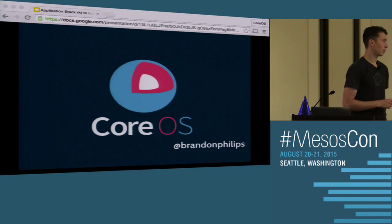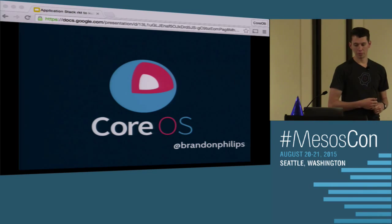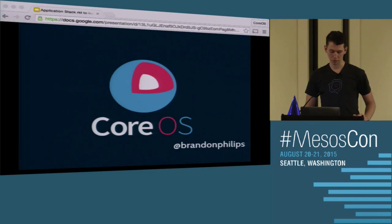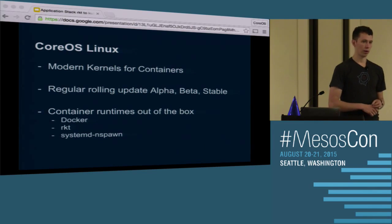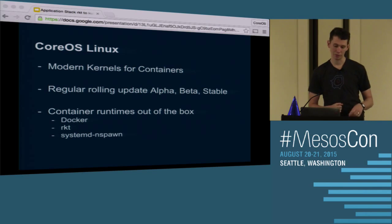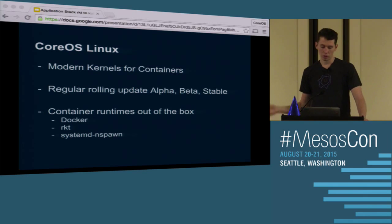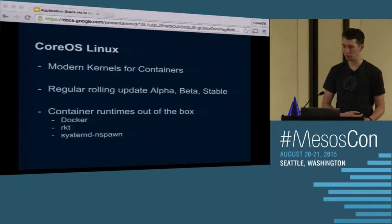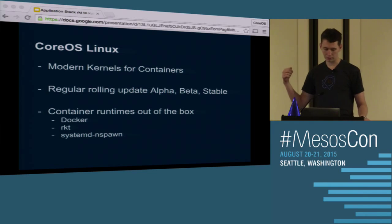At CoreOS, we build a number of open source projects, one of which is Rocket. But kind of the namesake is CoreOS Linux — that was the first open source project that we built. CoreOS Linux is really good in these environments, particularly where you're using all the containers and you need modern kernels to take advantage of all the bug fixes and feature enhancements required to get containers to actually work correctly. We ship a modern kernel for containers, we have a rolling update model — quite different than a lot of distros with their LTS releases. We ship plain vanilla kernels on a regular cadence, and we include a number of container runtimes out of the box, including Docker, Rocket, and systemd-nspawn.